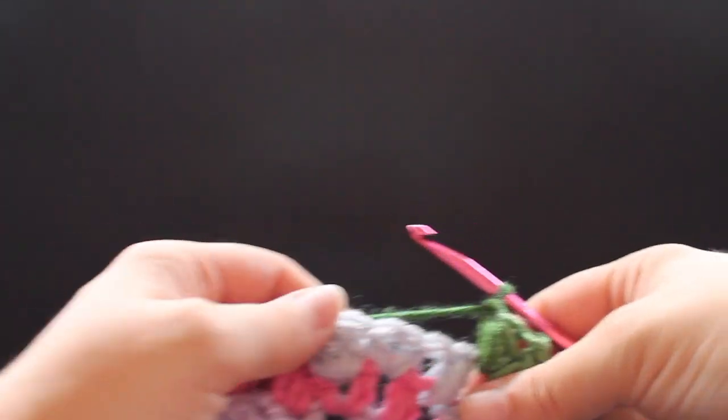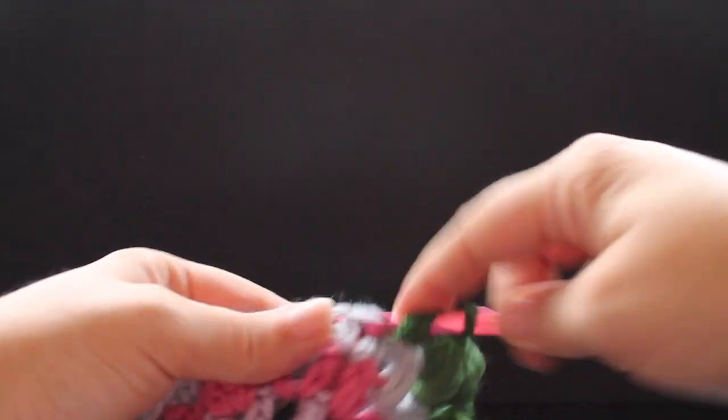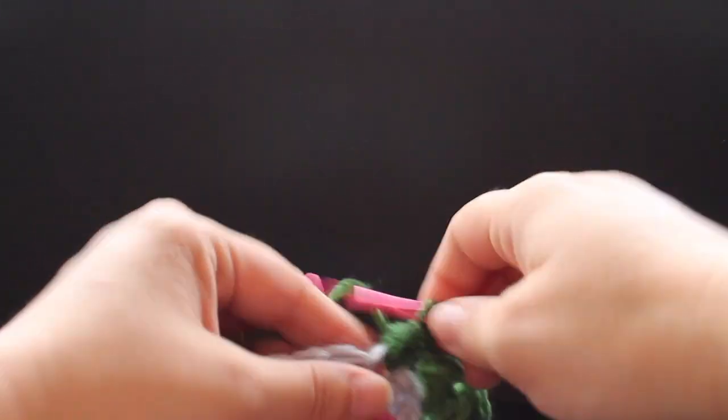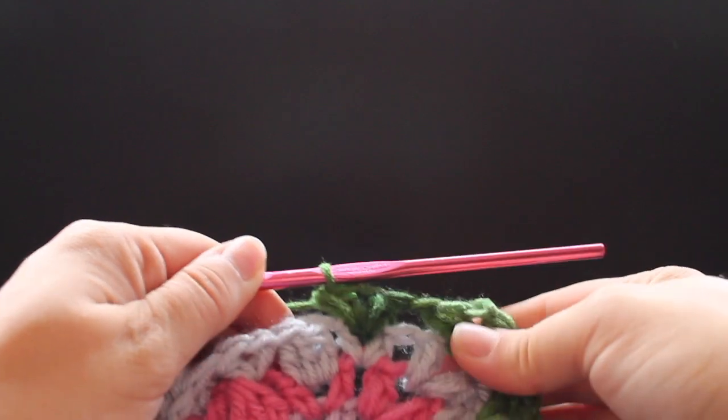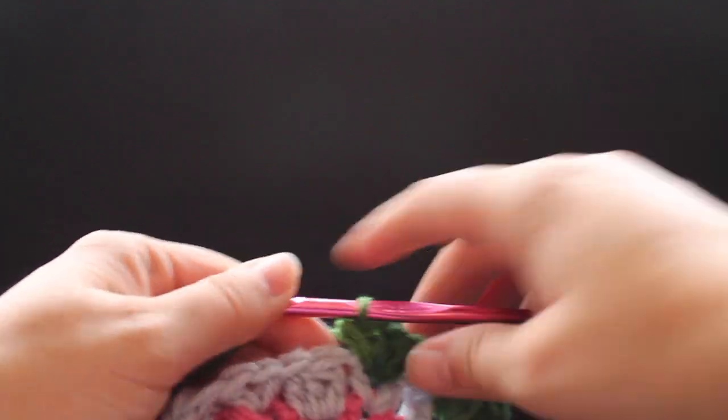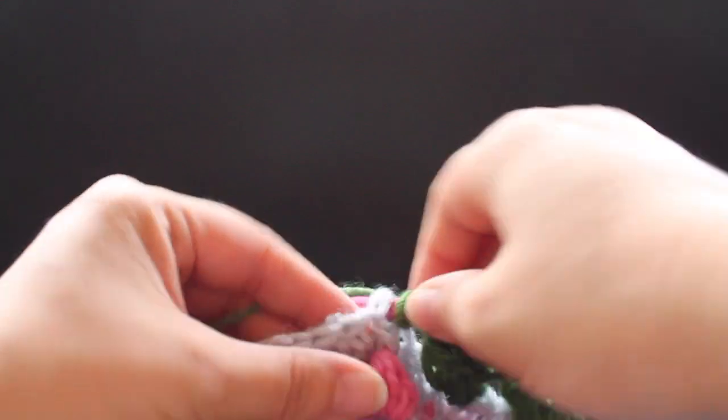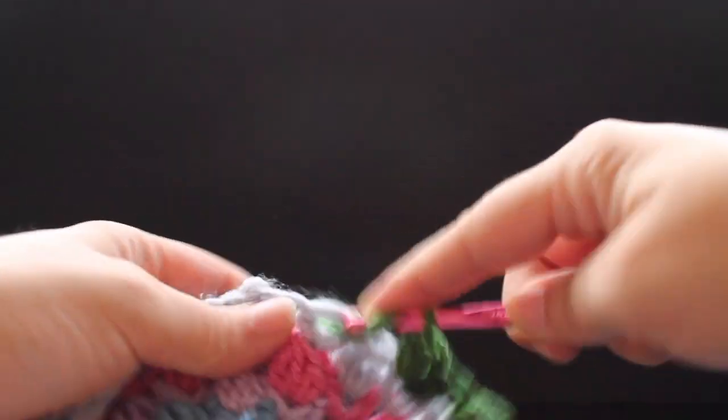So there's our small puff v-stitch, chain one, and then small puff v-stitch in that next half double crochet v-stitch.